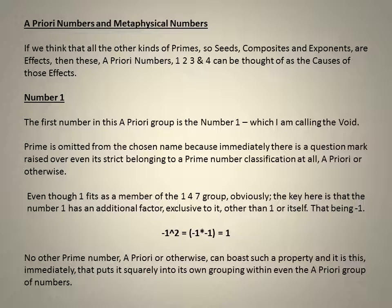If we think that all the other kinds of primes, so seeds, composites and exponents are effects, then these a priori numbers 1, 2, 3 and 4 can be thought of as the causes of those effects.